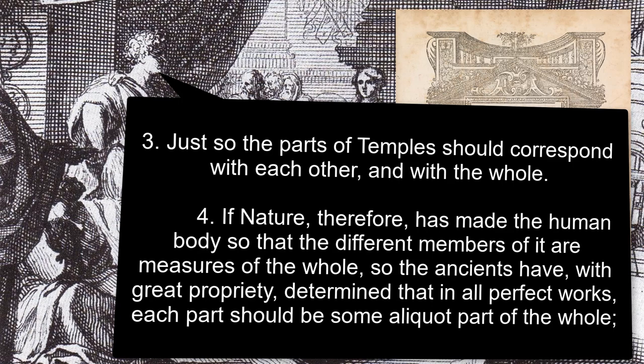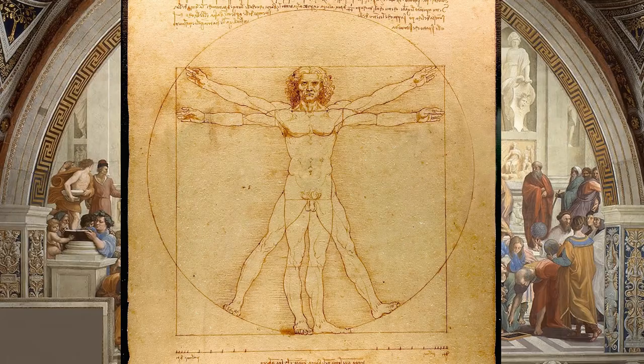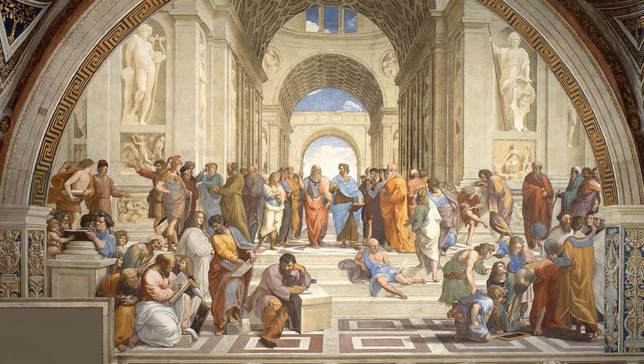Vitruvius wrote: 'Just so the parts of temples should correspond with each other and with the whole. If nature has made the human body so that the different members of it are measures of the whole, so the ancients have with great propriety determined that in all perfect works, each part should be some eloquent part of the whole.'